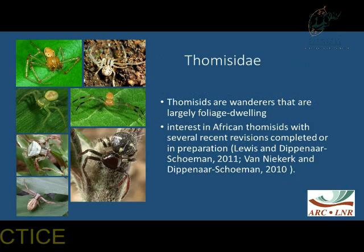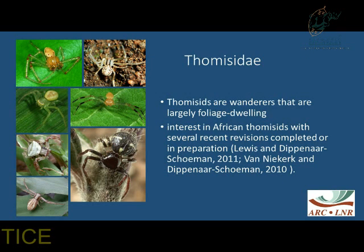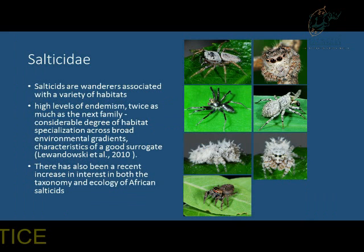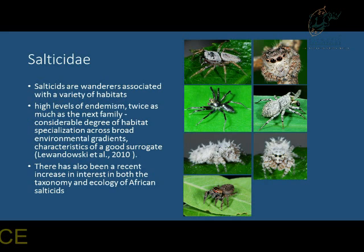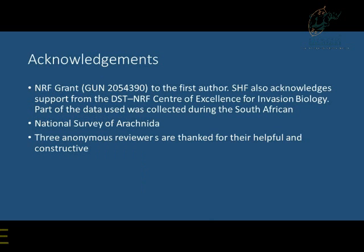Thomisidae are wanderers that are largely foliage-dwelling, and there's been considerable interest in Thomisidae systematics, which has worked out quite well. Salticidae has seen a growth in systematic work, and they have enormous levels of endemism — the highest level of endemism of any family in South Africa. There appears to be a considerable degree of habitat specialisation for these species, which is considered a good criterion for a surrogate. I'd suggest these as good surrogates for spider diversity in general. Thanks to all the people who did most of the work.